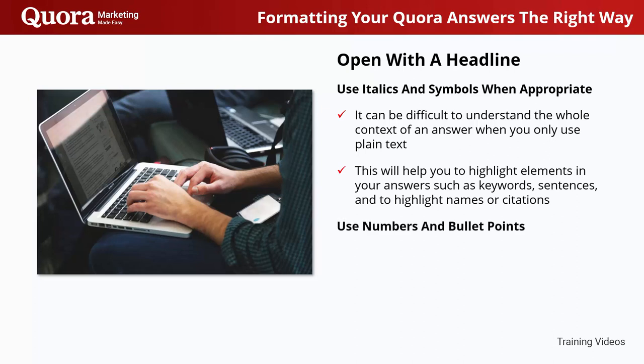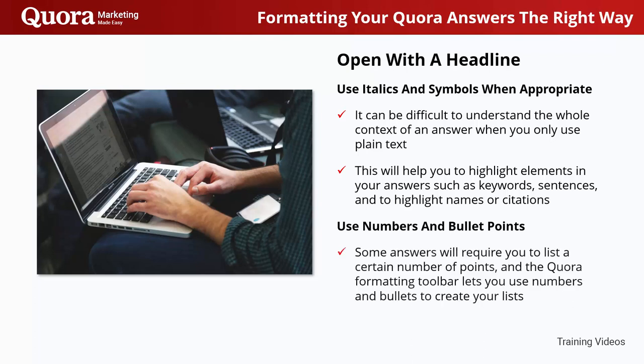Use numbers and bullet points. Some answers will require you to list a certain number of points, and the Quora formatting toolbar lets you use numbers and bullets to create your lists. This will help you to keep your answers more organized and easier to read.